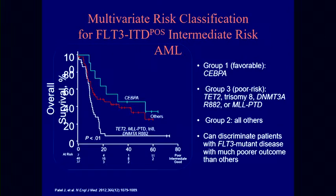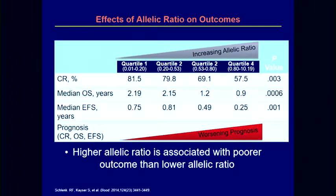Not only the type of mutation is important — whether it's a point mutation (which doesn't have the same adverse prognosis as the ITD) — but the degree of mutation burden is important. If you have a lot of the mutant allele compared to a small amount, you have a lower CR rate and very poor median survival. It's better if you have a lower burden of the mutant allele. Put simply: the more your leukemia cell is dependent upon FLT3 for signaling, the worse the outcome. Patients with a lower allelic burden may not be as FLT3-dependent.